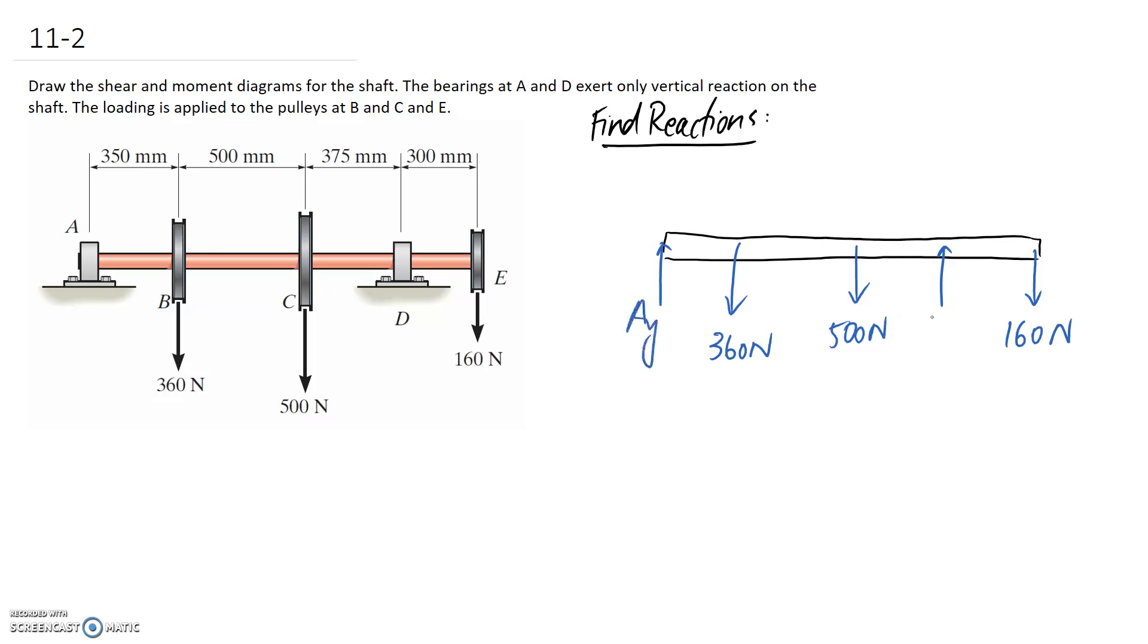Let's call this one Ay and this one Dy, and we have our equilibrium equations to determine what they are. I'm going to sum my moments at point A to figure out Dy to begin with. This is point A here, and Ay acts through it so it's not going to contribute to the equation.